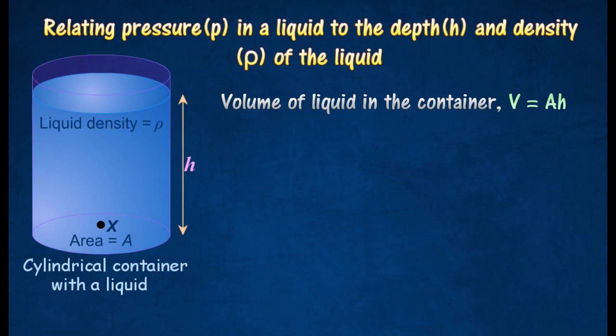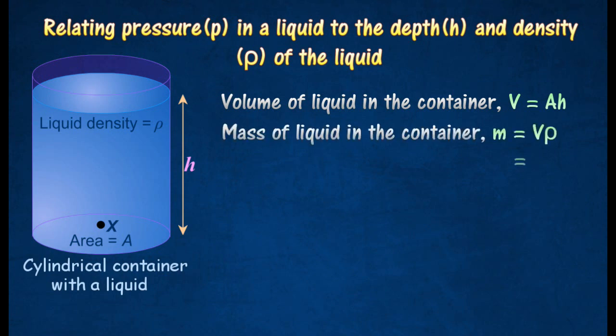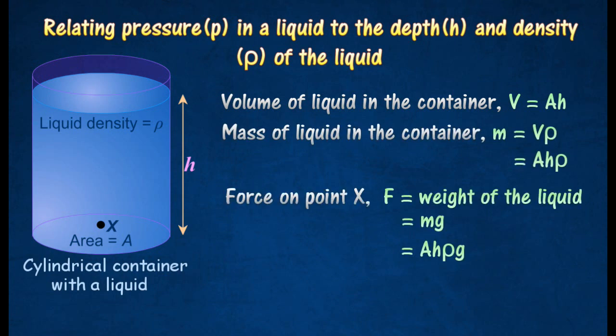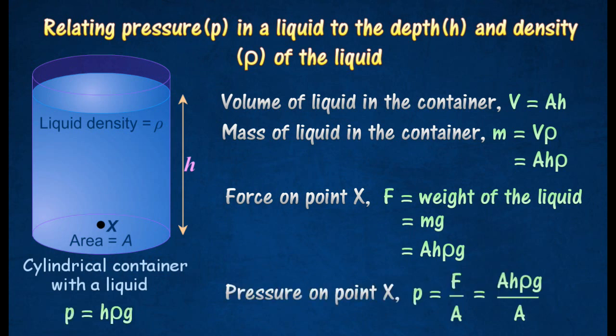Next, using the volume of the liquid and liquid density, find the mass of liquid in the container. At this point, we can find the force acting on point x. Pressure on point x is calculated by using the formula: force over area.